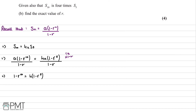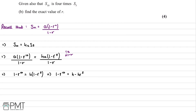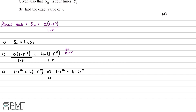We expand the right hand side to get 1 minus r to the power of 10 equals 4 minus 4r to the power of 5. Rearranging to look like a quadratic, we move everything to one side: r to the power of 10 minus 4r to the power of 5 plus 3 equals 0.